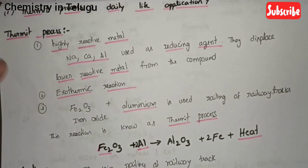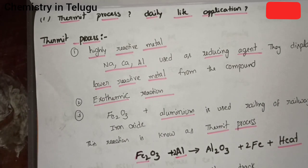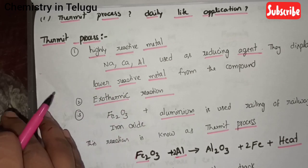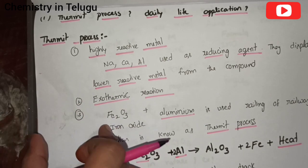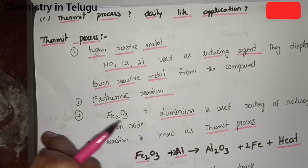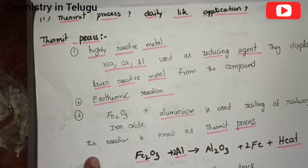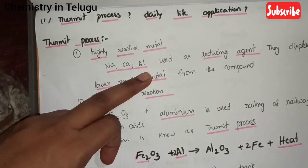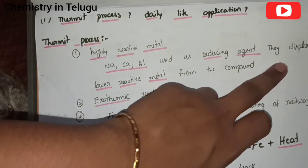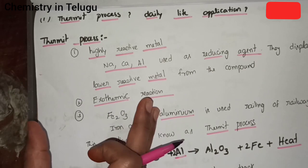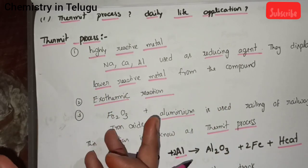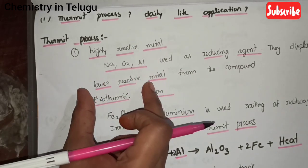Next is the thermite process. The thermite process is used to fill the gap between railway tracks. Highly reactive metals such as sodium, calcium, and aluminum are used as reducing agents. Highly reactive metals displace low reactive metals from their compounds.